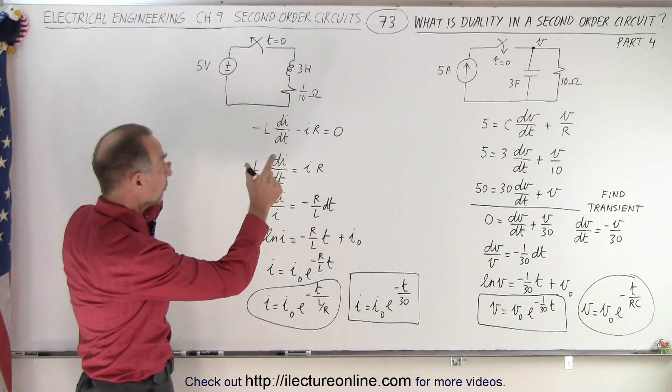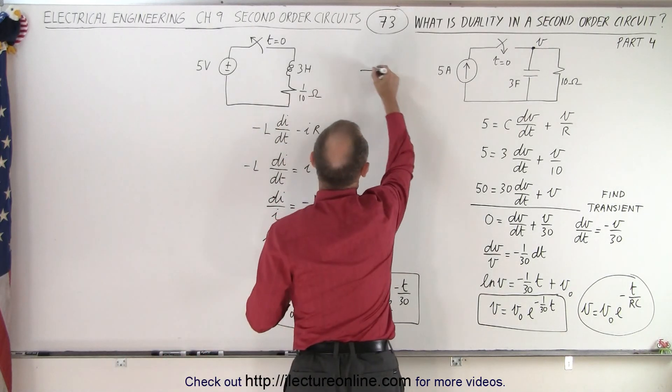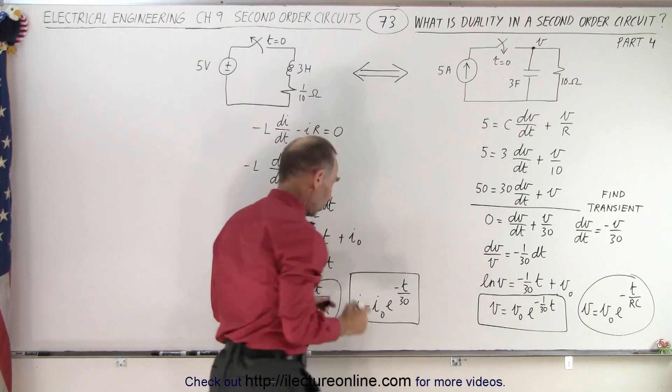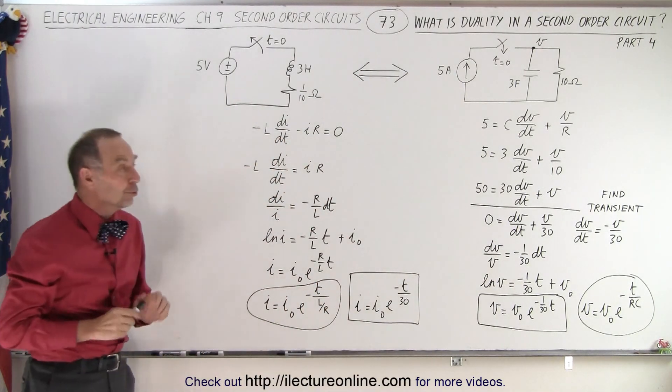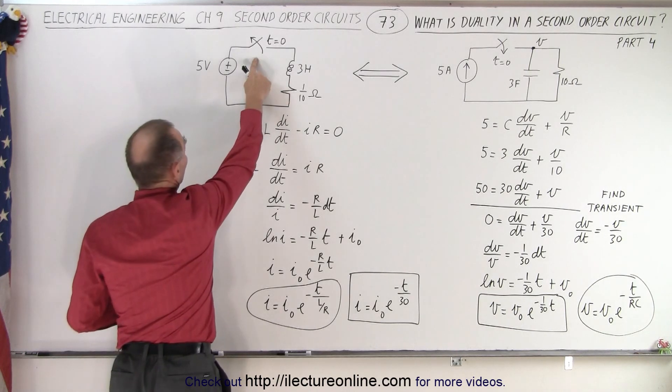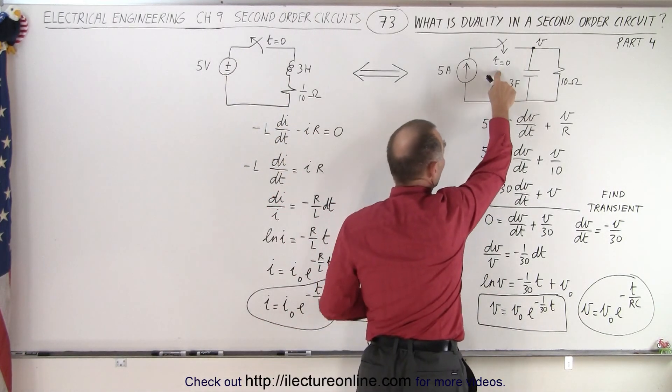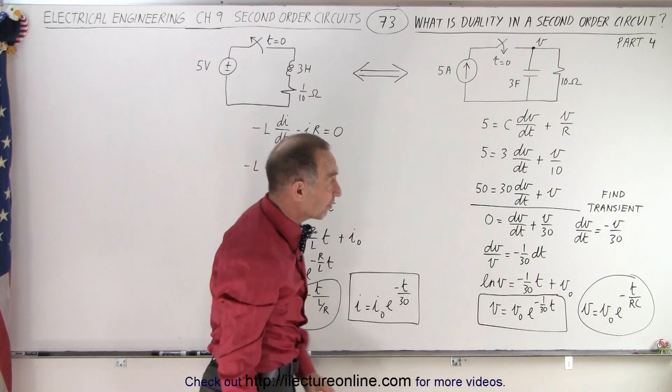Notice we're using the very same two circuits that we used in the previous video. So one circuit is the duality of the other circuit. Now notice what we're going to do. We threw in a switch - here where the switch opens at time equals zero, and there the switch has to close at time equals zero, because that one is a duality of the other.